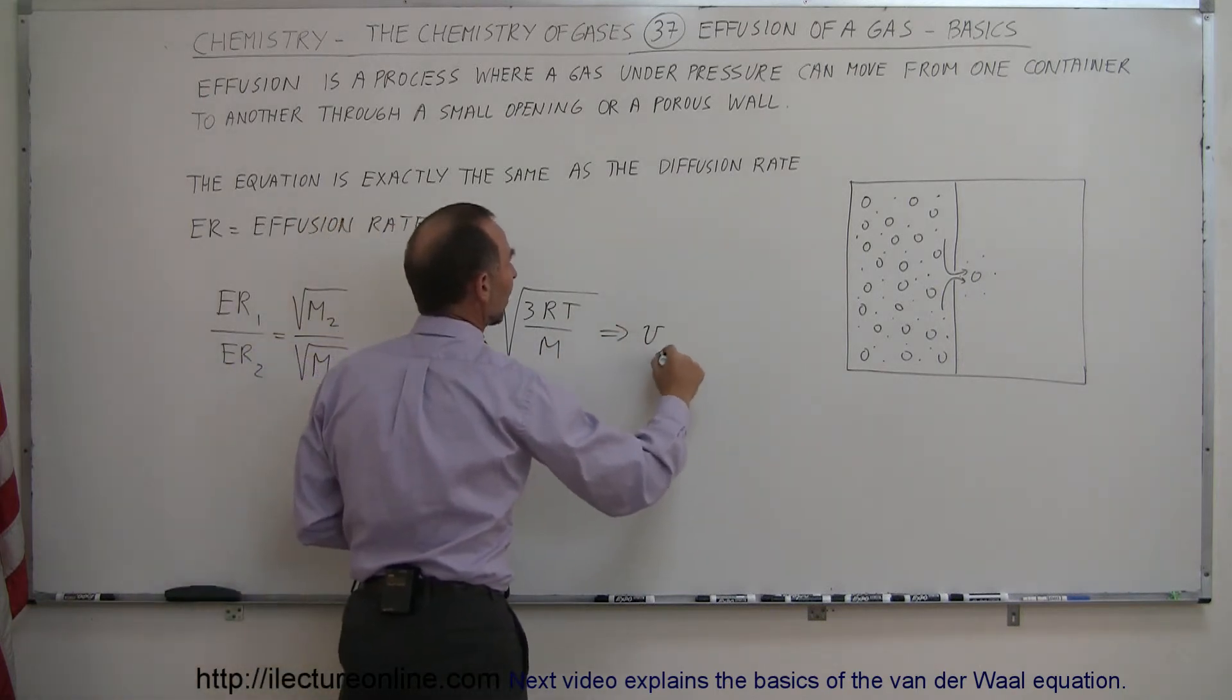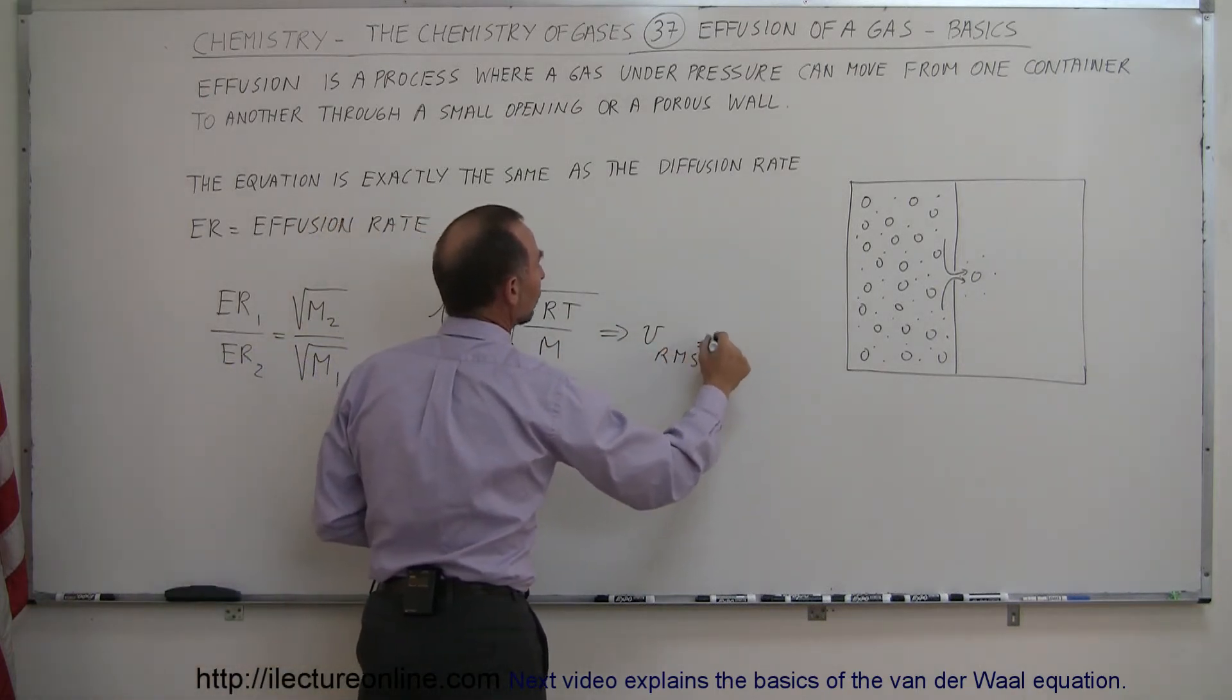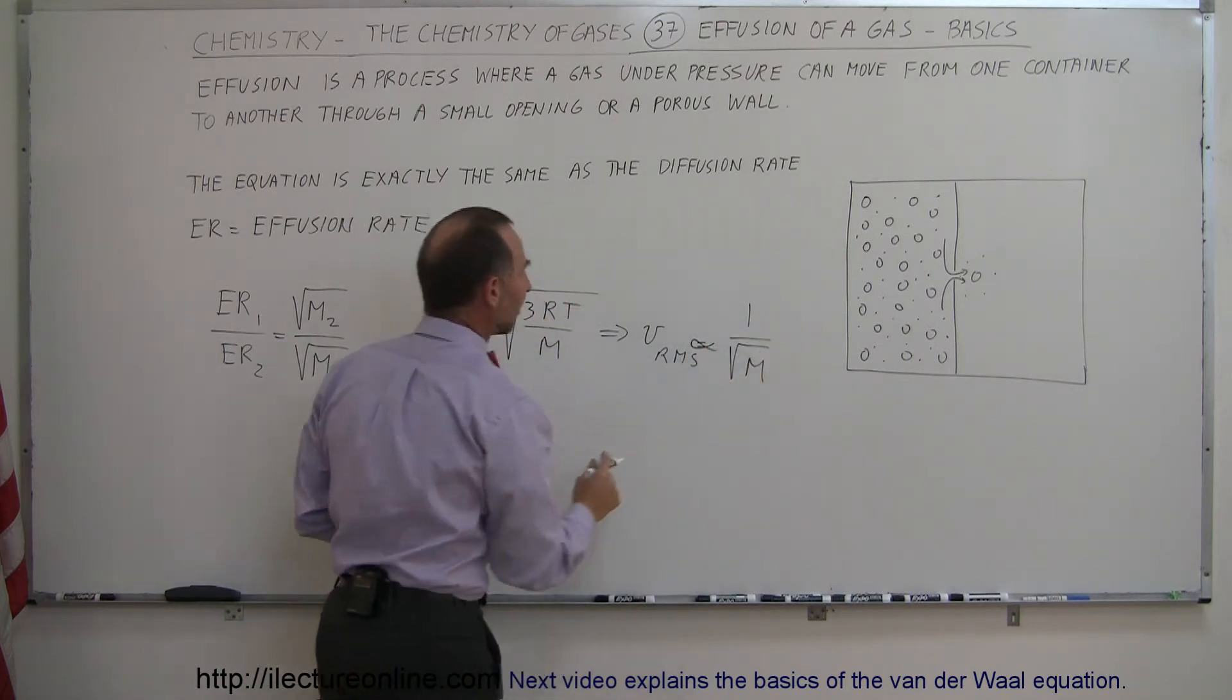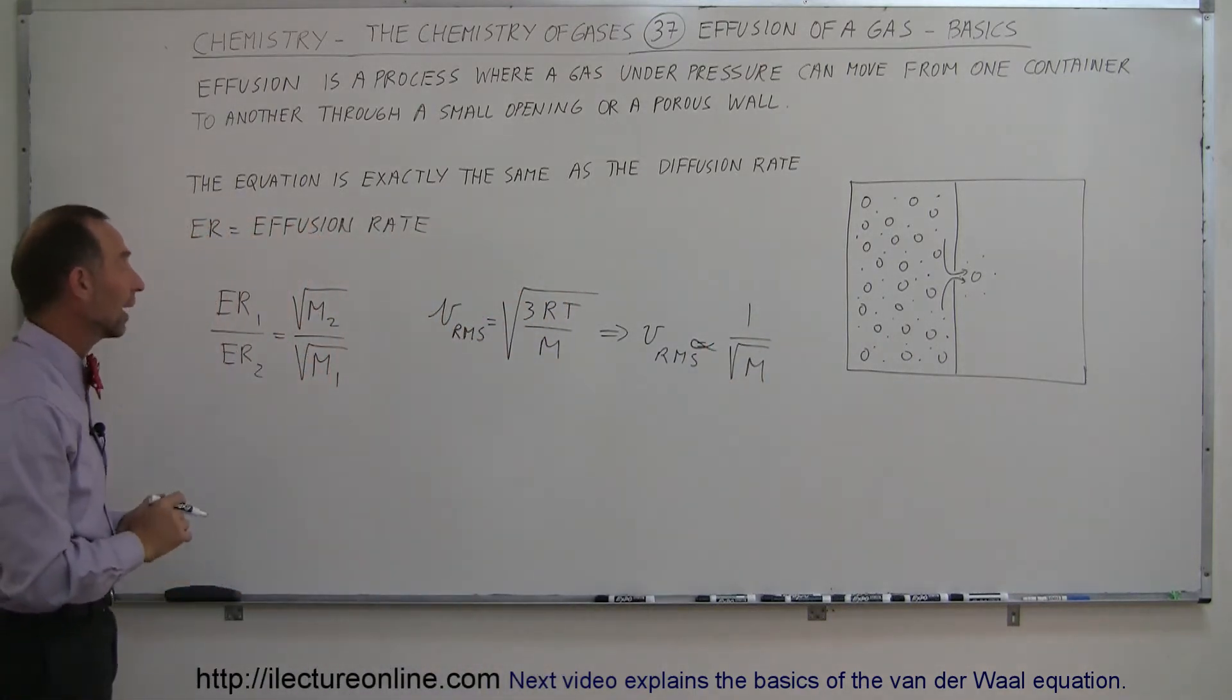In other words, the RMS velocity is equal, or is proportional to 1 over the square root of the molar mass. And that's why the effusion rates are like that.